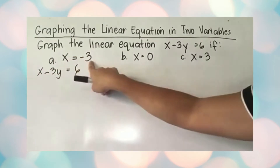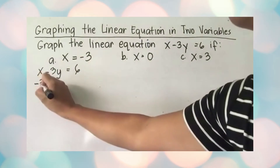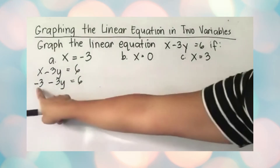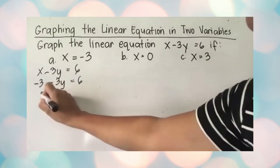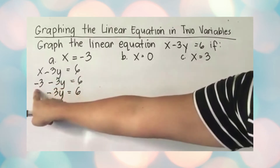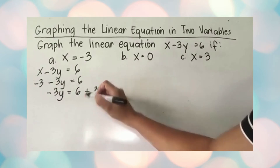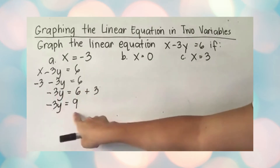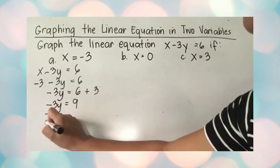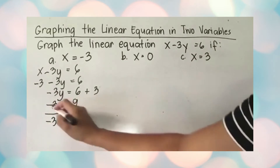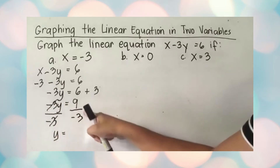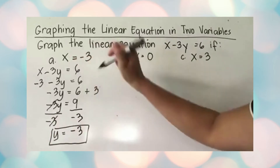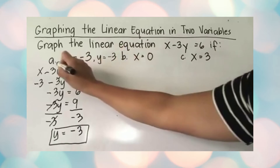For x equals negative three, substitute into x minus 3y equals 6: negative three minus 3y equals 6. Move negative three to the other side — it becomes positive — so negative 3y equals 6 plus 3, which is 9. Divide both sides by negative three: y equals 9 divided by negative three, which is negative three. So if x is negative three, y is negative three.